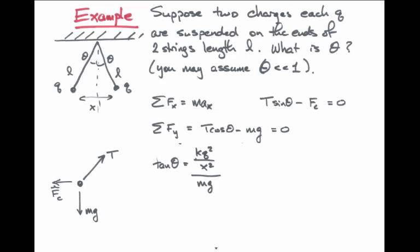The Coulomb force is K times the charge squared, because there are two charges of equal size, divided by the distance squared, x squared, and the gravitational force is just mg. If we simplify this expression just a bit, it's Kq squared over mg x squared.